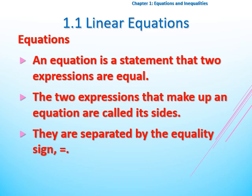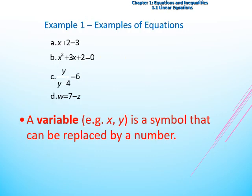What is the definition of the equation? An equation is a statement that has two expressions that are equal. The two expressions that make up an equation are called its sides and they are separated by the equality sign. For example, the forms of equations may be x plus 2 equal to 3, or x squared plus 3x plus 2 equal to 0, or a fraction like y over y minus 4 equal to 6, or u equal to 7 minus z. So they are all examples of equations.